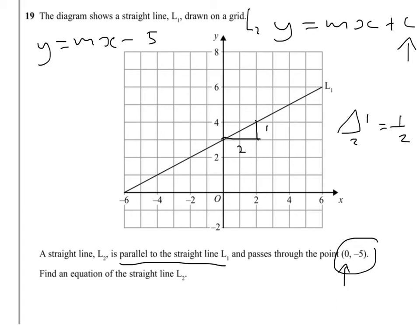So the equation then, they share the same gradient because they're parallel. So L2 will be y equals a half x minus 5. You can write that if you like as y equals x divided by 2 minus 5. Either of those answers is perfectly alright. So that's your answer.